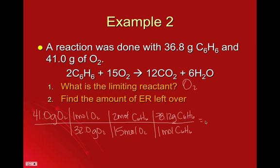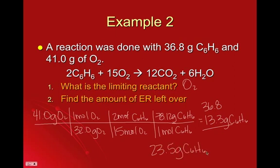So we plug that in, 41 times 2 times 78.12 divided by 32 times 15. And I get 13.3 grams of benzene. So to figure out what's left over, you just take your 36.8 that you started with, and subtract what you're going to use up. And you have 23.5 grams of benzene left over.